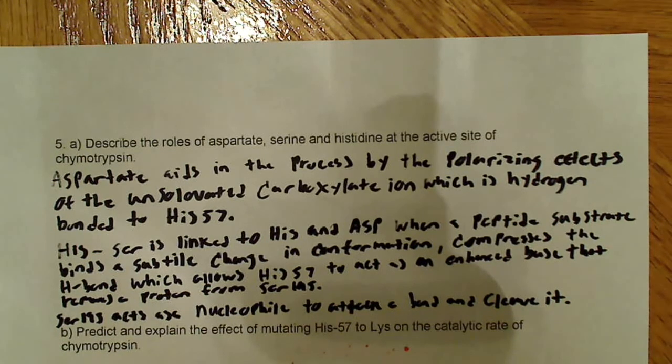So let's start with the aspartate here. Aspartate aids in the process by the polarizing effects of the unsolvated carboxylate ion, which is hydrogen bonded to histidine 57. What it does is it helps change the polarity of the bond to histidine 57. It helps make it a little bit easier for this reaction to proceed.